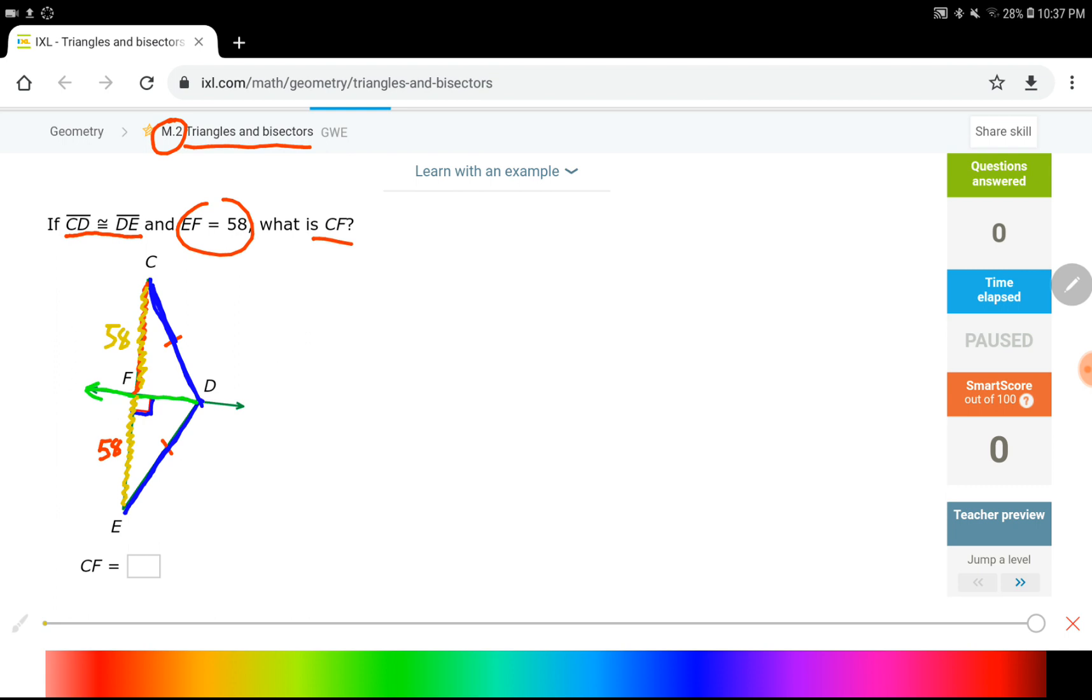Everything is going to be like mirrored on the other side. So everything on the left side of the triangle or on the upper side of the triangle is going to be equal to the other side. So the answer to this one would be 58.